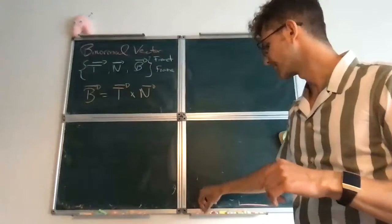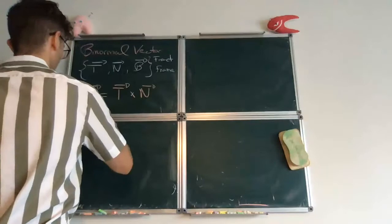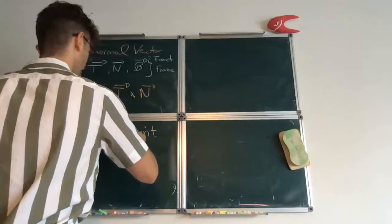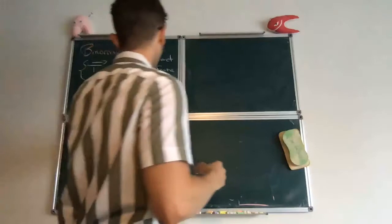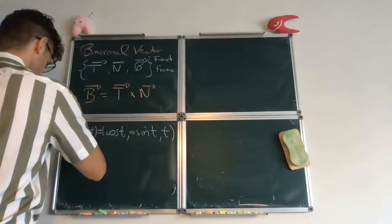As an example, let's say you want to compute it for the helix, which is a curve that has this equation. So again, you have to start with the tangential, then with the normal, and then with the binormal. So the tangent vector requires the velocity.